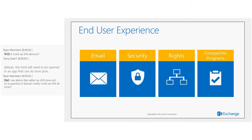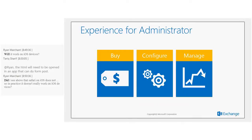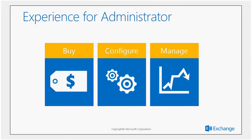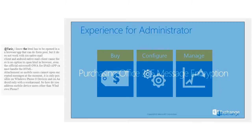For admins, there is the purchasing piece, and configuration is much easier with simpler actions for encryption and decryption rules. PowerShell commandlets can set up different branding elements. Admins can also manage usage patterns, and because it's built on top of Exchange Transport rules, granular reports are available through the Office 365 workbook — all available directly out of the box.